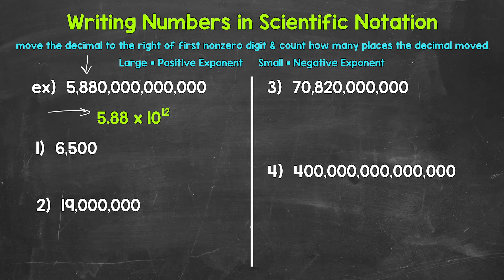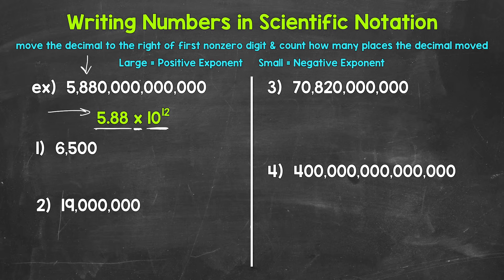Here's that number in scientific notation. We can see how that number was condensed — it was shortened, but it's still equal to the number above. Now, when it comes to scientific notation, we're going to have a number that is greater than or equal to one, but less than 10. And we're going to multiply that by a power of 10. Keep in mind, these are equal — 5.88 times 10 to the power of 12.